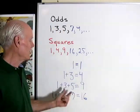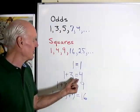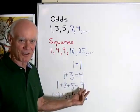So it's a great relationship. Add the first two odds, get the second square. First three odds, get the third square, so on and so forth.